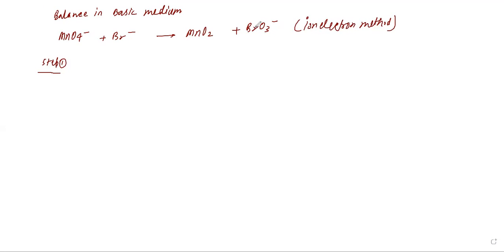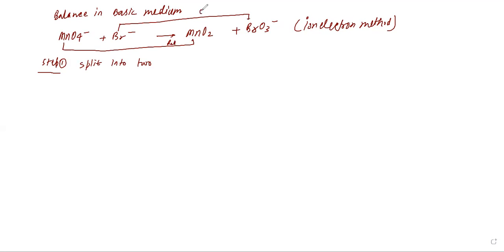From today onward you will be able to do this very easily. Step number one: split into two half-reactions. Here it is going to reduce — this is reduction because there is loss of oxygen. Here is oxidation because there is gain of oxygen. So I am writing here MnO₄⁻ going to MnO₂, and the second one is Br⁻ going to bromate ion BrO₃⁻.